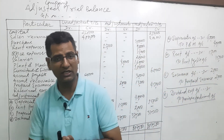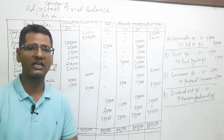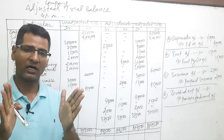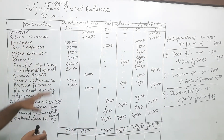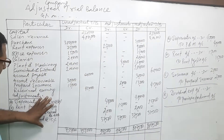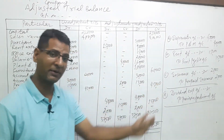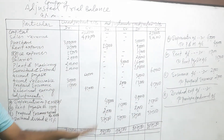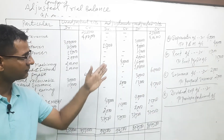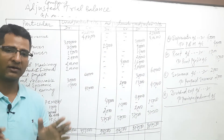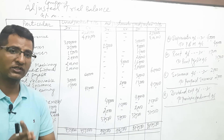But without journal entries, we cannot make this adjusted trial balance. There are different steps: on the basis of journal entries we make the ledger, on the basis of the ledger we make the trial balance. Adjustments are given, and all additional information has double effects — both debits and credits. My suggestion is that first you must understand journal entries and the different rules of debit and credit.